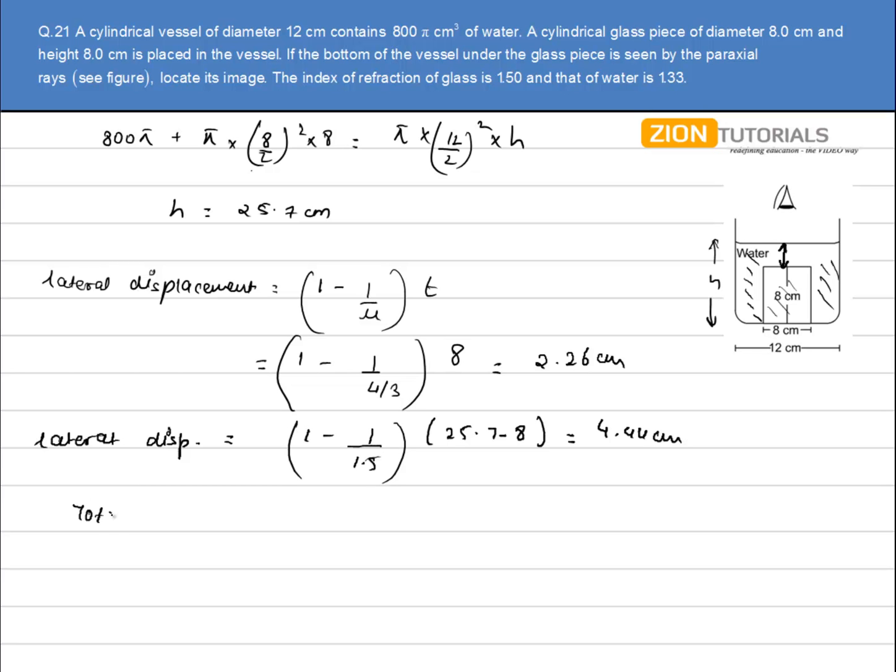The total lateral displacement is 2.26 + 4.44, which comes out to be 7.1 cm. So the image will be formed at a distance of 7.1 cm above the bottom surface. That is the answer.